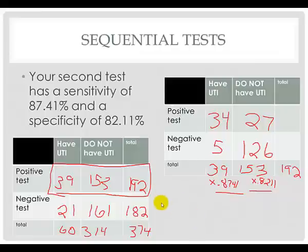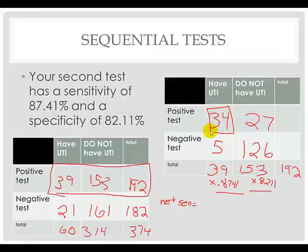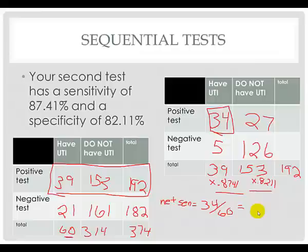For specificity, we had 153 people who were told they had a urinary tract infection but probably don't, so we need to correctly identify more of these. With an 82.11% specific second test, we take 153 times 0.8211, giving us 126 people correctly identified as not having the disease. That leaves 27 who still have a positive result. Our net sensitivity in this sequence is 34 divided by 60, giving us 56.66%.